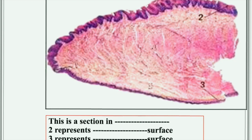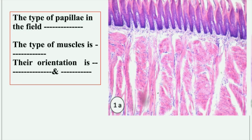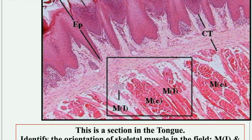This is a section in the tongue. Label two represents the dorsal surface, characterized by the papillae, and label three represents the ventral surface, which has no papillae compared to the dorsal surface. A label on the central mass indicates the skeletal muscle of the tongue. The filiform papillae are the only type covered by keratin and the only type devoid of taste buds. The muscle orientation is vertical and transverse: M1 is vertical, MC is transverse.